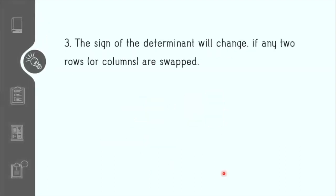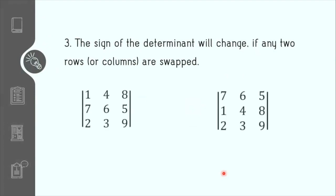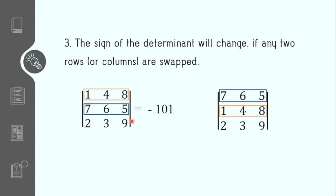Theorem number 3 states that if any two rows or columns are interchanged, the sign of the determinant will change. For example, the element in the first row was moved to the second row, and the element in the second row was moved to the first row. If we solve the determinant on the left, we get negative 101, and on the right, we get positive 101. So the main idea is that we get the same magnitude but a different sign.